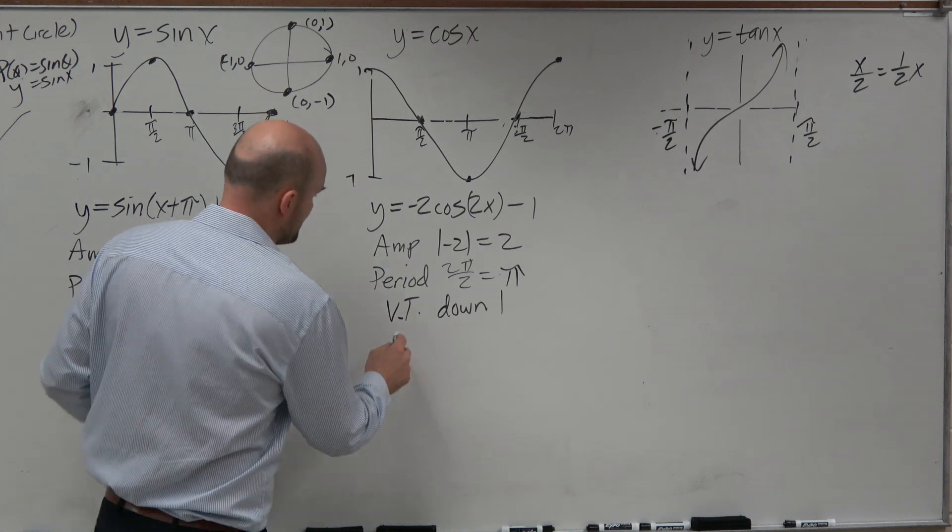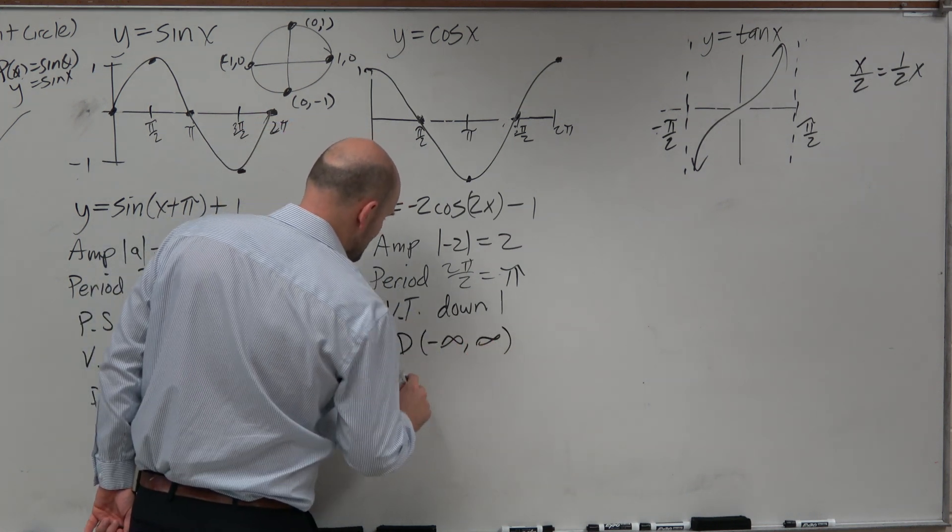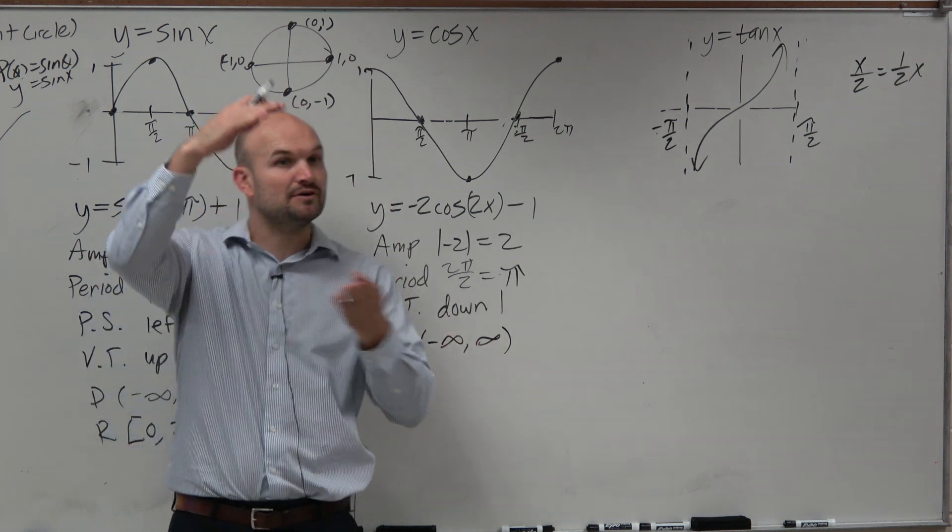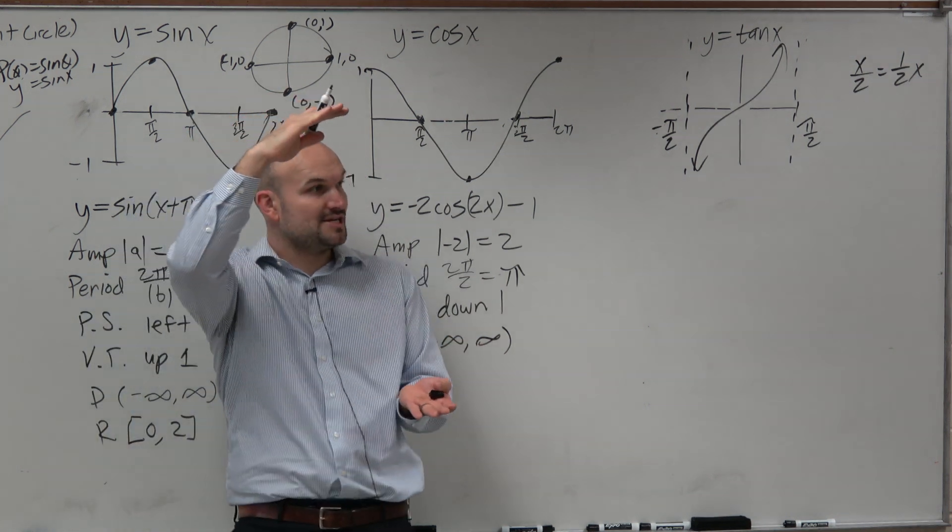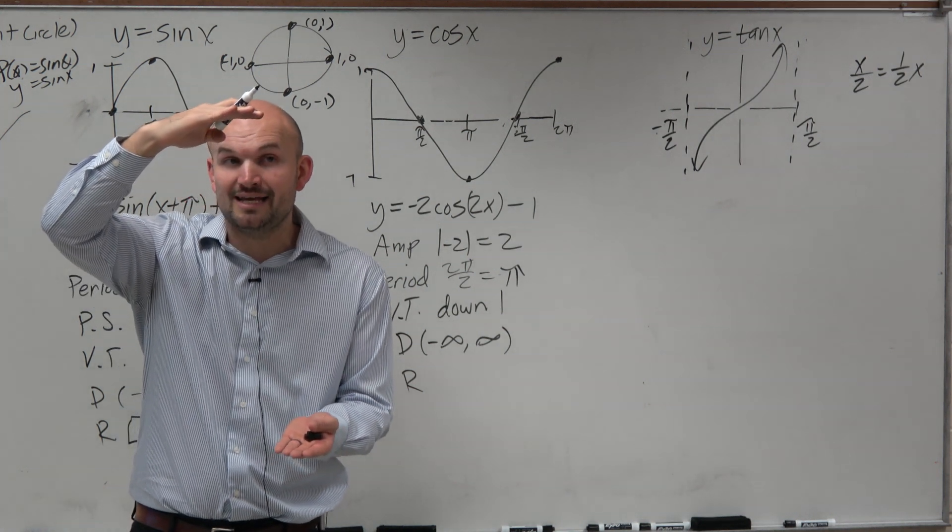But again, here's where people get mixed up. So the domain, they don't get mixed up. They get mixed up on the range. Because they say, oh, the graph goes down from negative 2 to 2. So the range is from negative 2 to 2. And you're right. Until we do a shift.